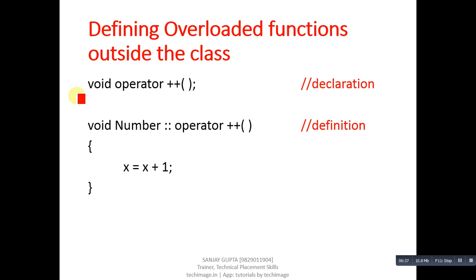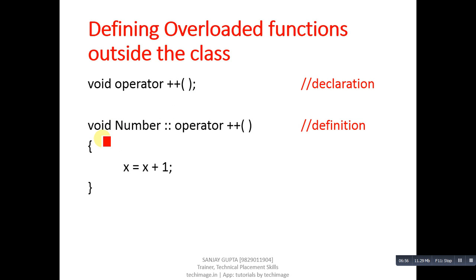If you want to define the overloaded function outside the class, you can follow this syntax. For declaration: write void, then the operator keyword, then the operator symbol, followed by a semicolon. For definition: use the scope resolution operator, then operator keyword, then operator symbol, and inside the braces define the body of the overloaded function.